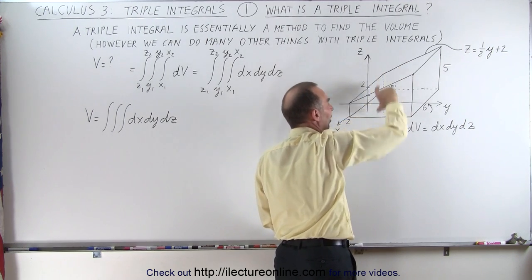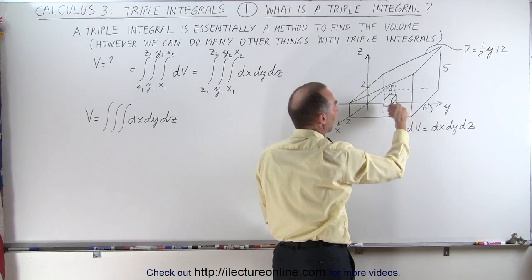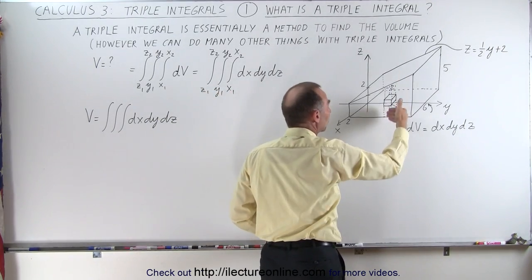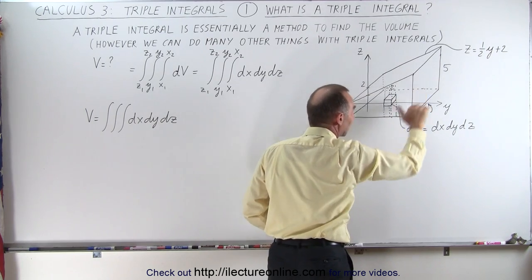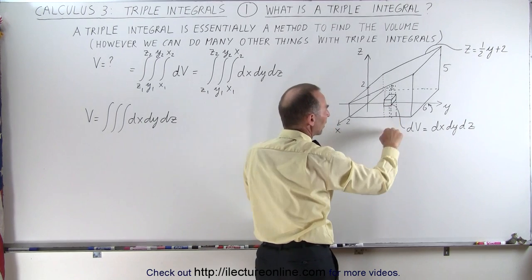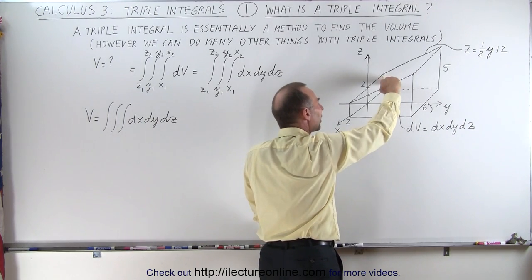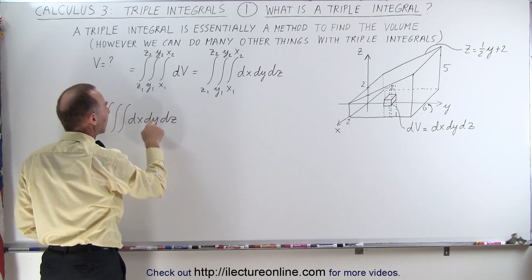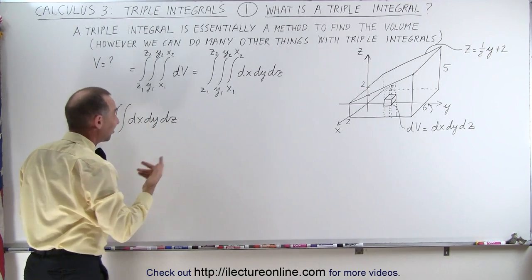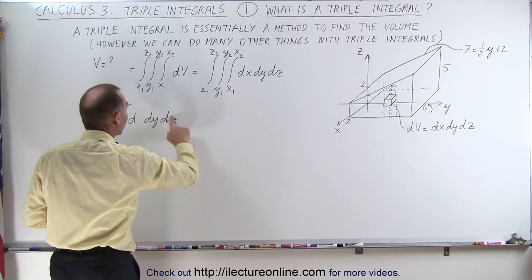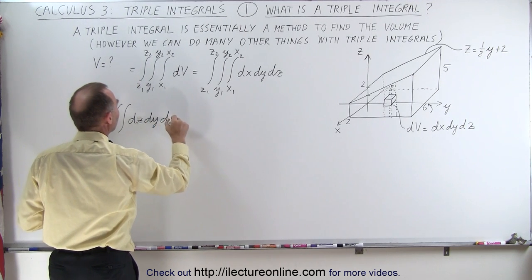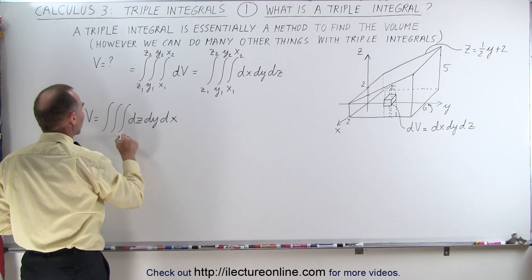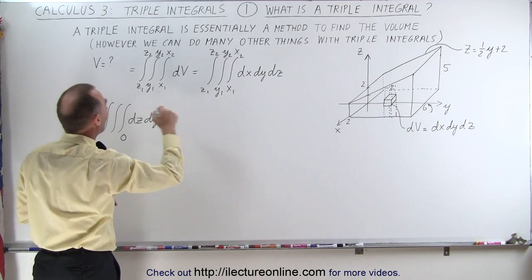Then we integrate in the y direction, giving a very thin slice with width dx, height z, and length 6 units. Then we integrate in the x direction to find the total volume. When we integrate in the z direction, our limits go from 0 to the top, and the top is described in terms of y. So we integrate dz first, then dy, then dx. We rearrange the differentials accordingly — dz first, then dy, then dx. The z limits go from 0 to (1/2)y + 2.